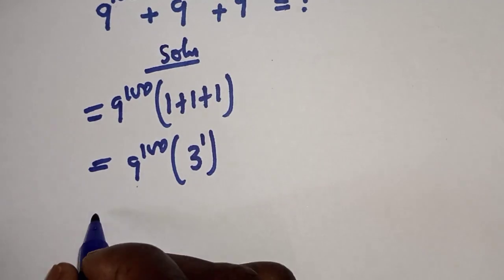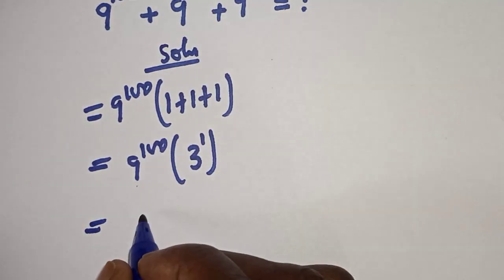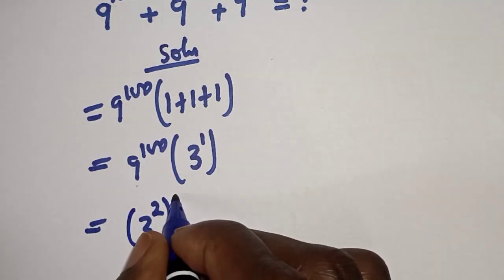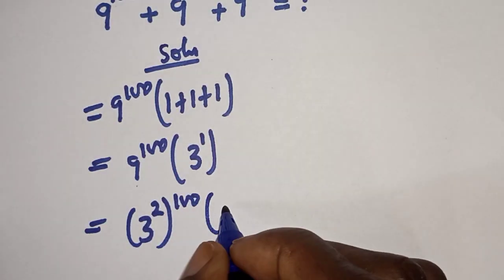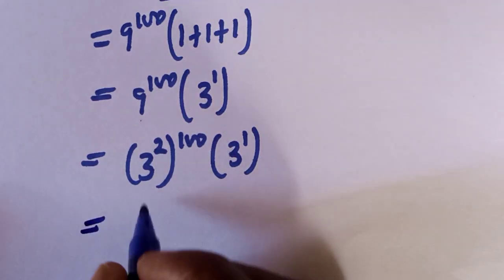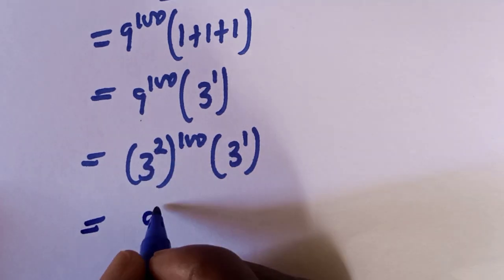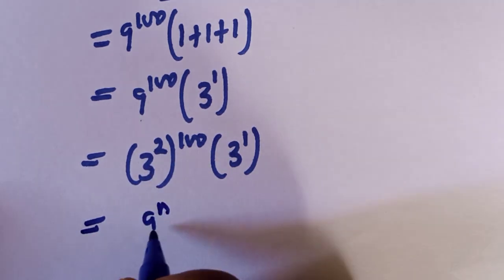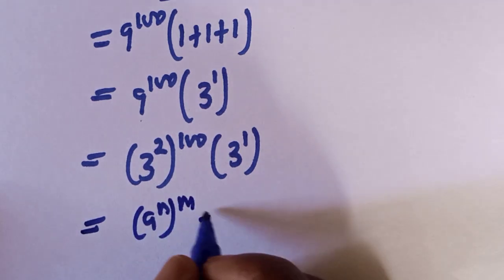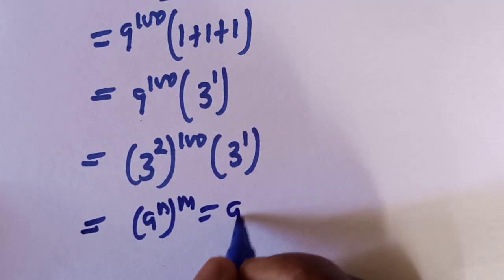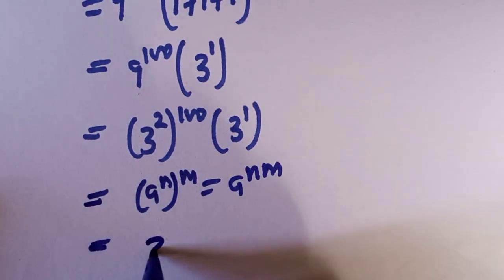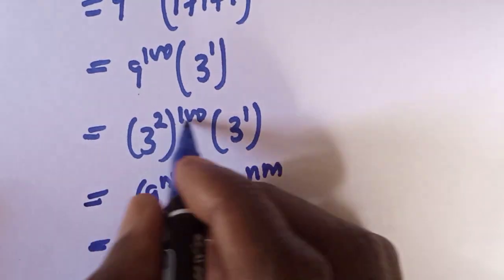This is equal to 9 — which we can write as 3 squared — raised to the power of 100, multiplied by 3 raised to the power of 1. Using the rule that a raised to power n, to the power of m, equals a raised to power n times m, we get 3 raised to the power of 2 times 100, which is 3 raised to the power of 200, multiplied by 3 raised to the power of 1.